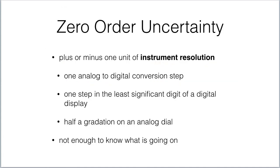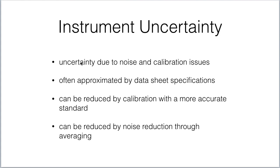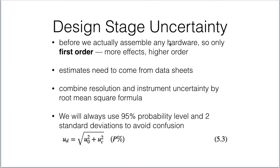To recap: zero-order uncertainty is all about instrument resolution. Instrument uncertainty comes from variations due to noise and calibration issues in the particular instrument. Design stage uncertainty is a first-order uncertainty — it combines the instrument uncertainty with the zero-order resolution uncertainty — and it's usually a good enough estimate when selecting hardware to know if measurements will be accurate enough.